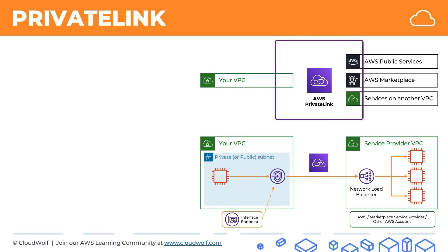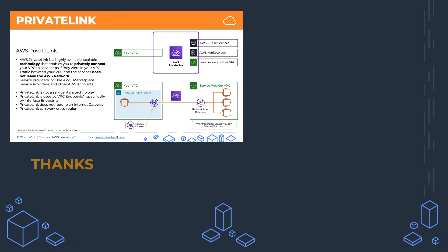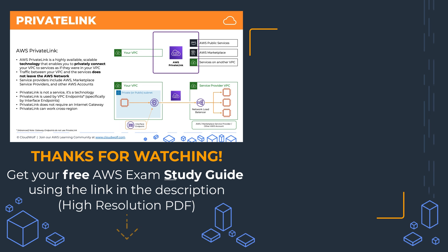So that's another key important thing to remember for the exam. AWS PrivateLink is a technology, it's not a service, whereas the interface endpoint uses the technology of AWS PrivateLink. So there we go. That's all about AWS PrivateLink. And here's a quick summary of what we discussed. I look forward to seeing you back here next time. Until then, enjoy the cloud.